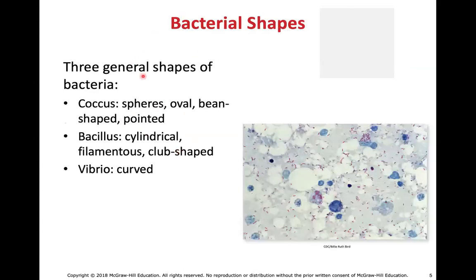There are three general bacterial shapes. The first is cocci — circles, spheres, ovals, bean-shaped, and pointed forms. Bacillus are cylindrical, filamentous, or club-shaped bacteria. And vibrios are anything that has a curve, kink, or spiral shape.